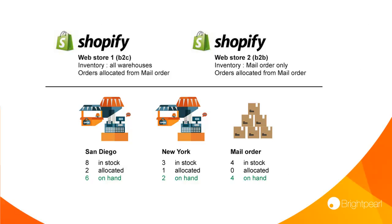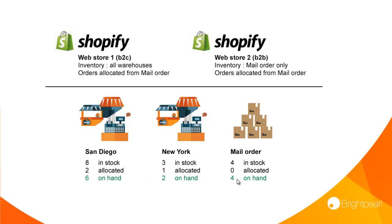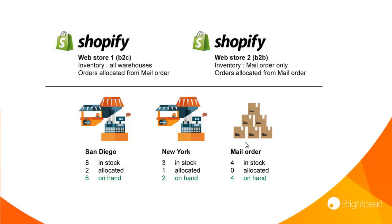What we've got here is two different Shopify stores — a B2C store and a B2B store. For the first store, we require inventory from all warehouses to be available. So we sum all of the on-hand levels from all of our warehouses — six, two, and four — meaning we've got twelve of this item available on store one. But the second store is a B2B store and we only want to have available inventory from our mail order warehouse, which means for the same product we only show four on this Shopify store.